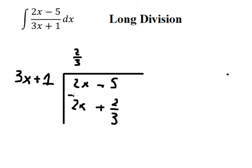Now we need to subtract the two equations. This gives us zero x, and negative 5 minus 2/3 gives us negative 17/3.